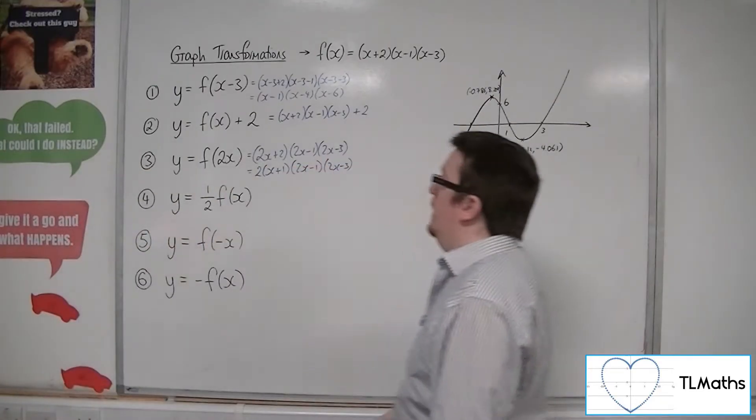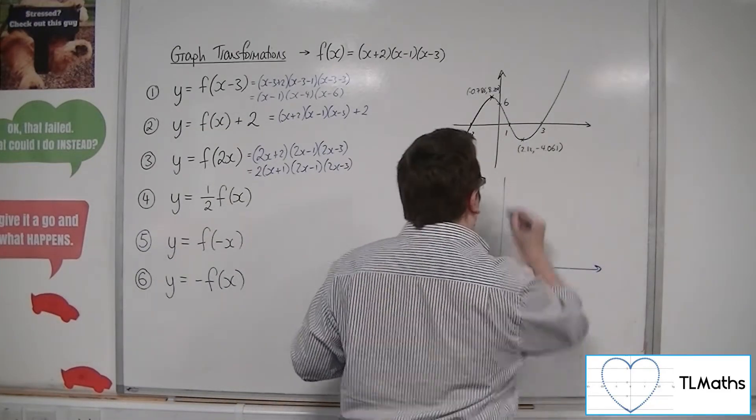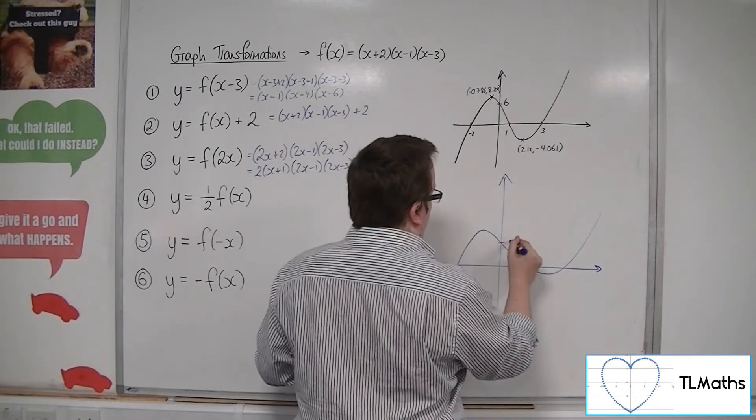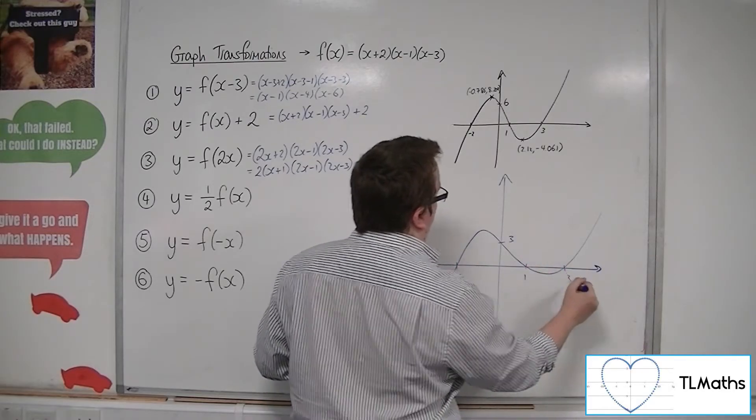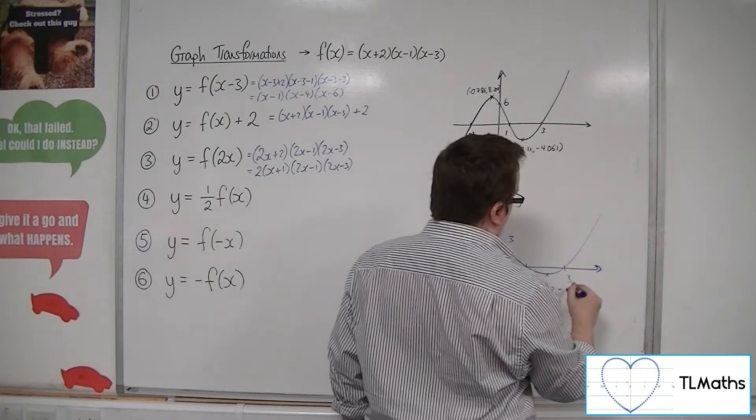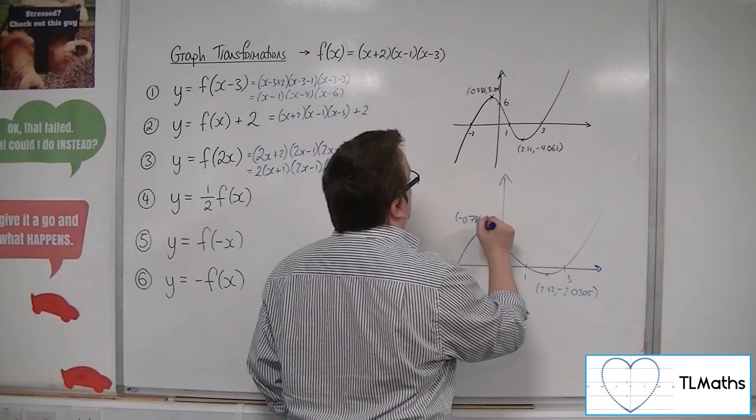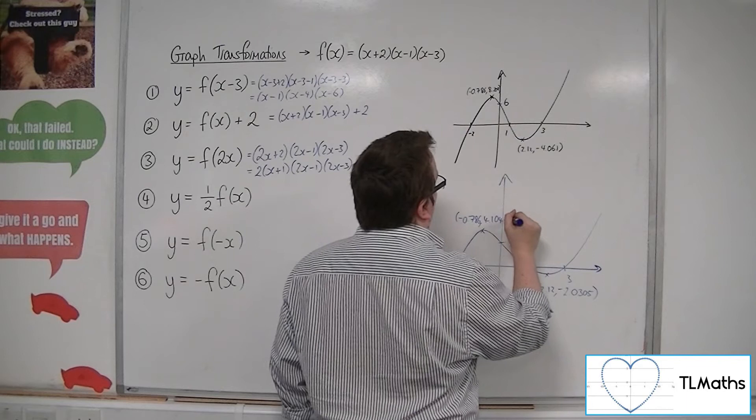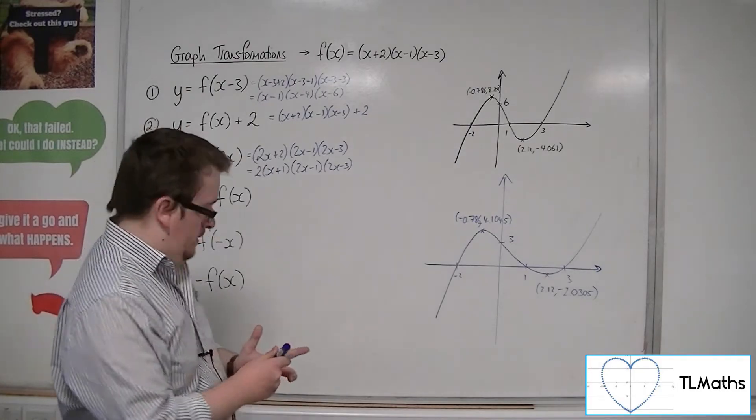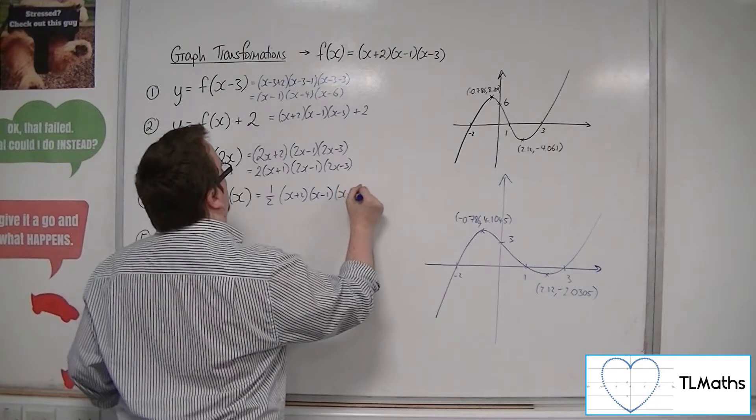Now, (1/2)f(x) stretches the curve by a factor of a half, parallel to the y-axis, just kind of squash it down. So you would now get something that would look like, maybe something like that. This point would now be 3, but the x-coordinates will stay the same. This one will be (2.12, -2.0305). And this one will be (-0.786, 4.1045). And that would be my transformed curve.